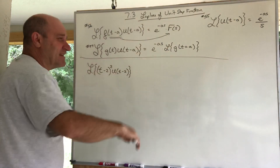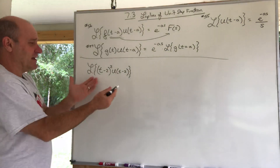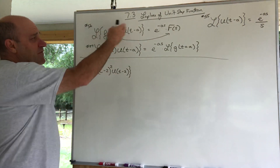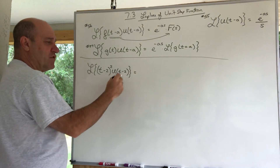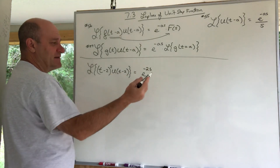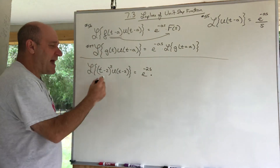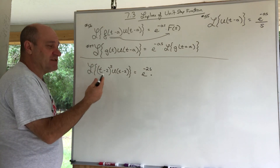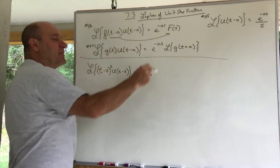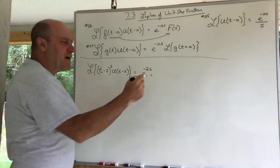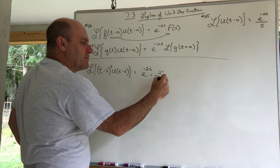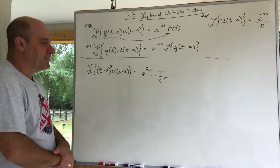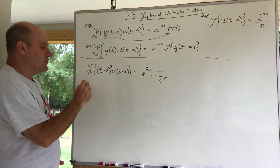Here's an example: the Laplace of (t-2)²·u(t-2). The argument of the function matches the argument of the unit step function, so this is a rule 56 case. We put e to the negative 2s out front, then take the Laplace of t² as if it wasn't shifted. The Laplace of t² is 2 factorial over s cubed, which is 2 over s cubed. Done.